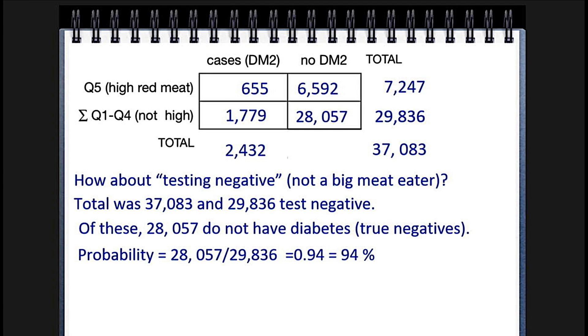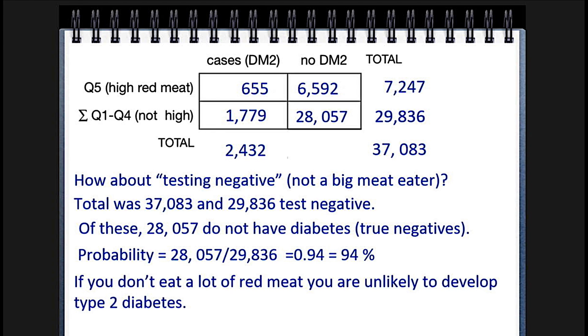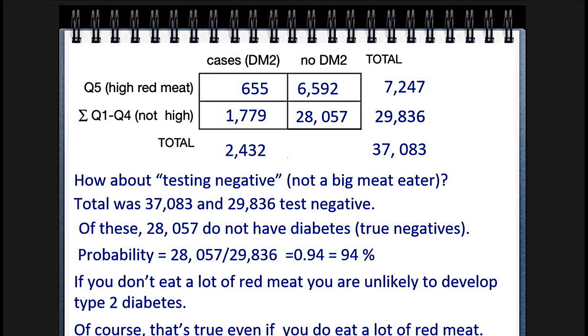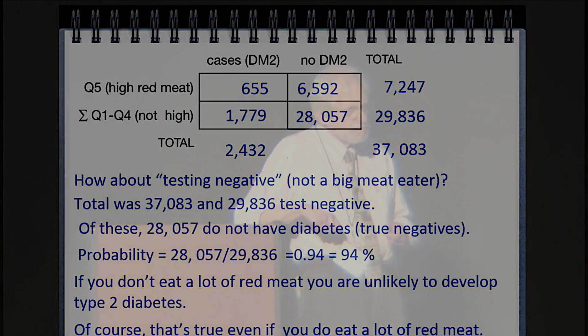The specificity is 94%. That means if you don't eat any red meat, you're not going to get diabetes. Of course, even if you do eat red meat, you're probably not going to get diabetes. The problem is they're using a method that can't really be applied to low-incidence diseases. Diabetes is a very serious disease, but if you take a population of 30,000 men over a few years, only a few of them will develop diabetes.